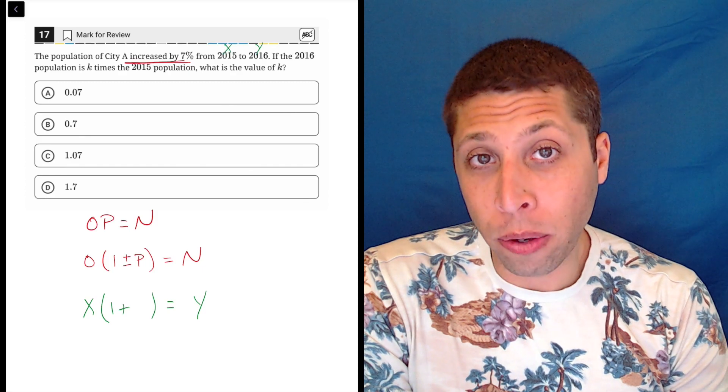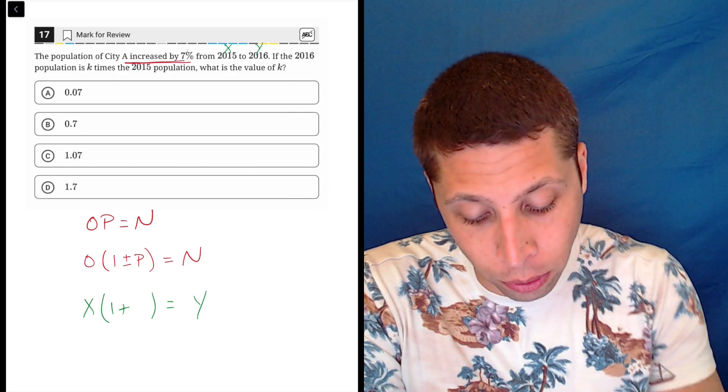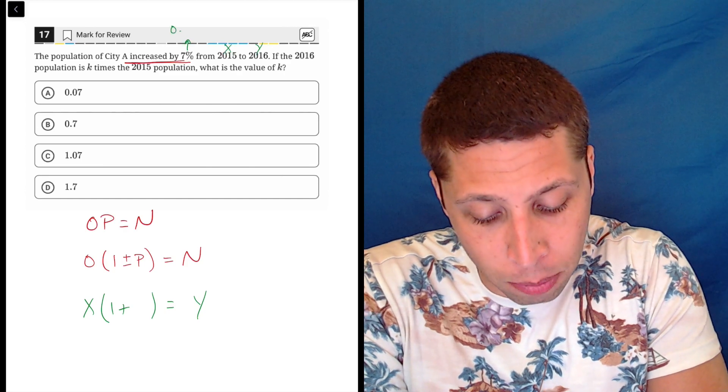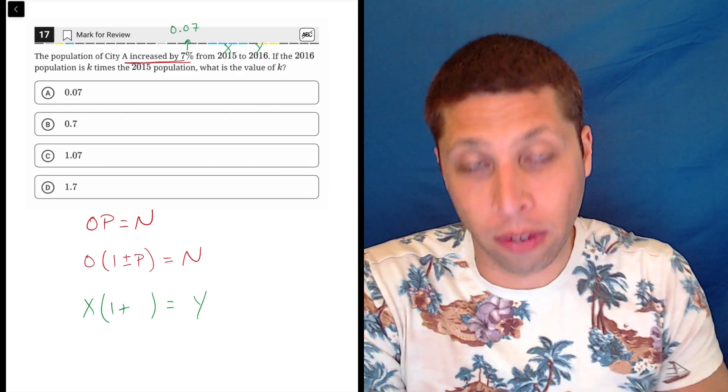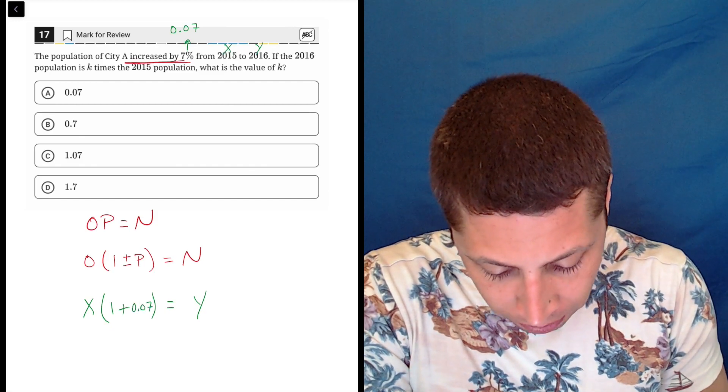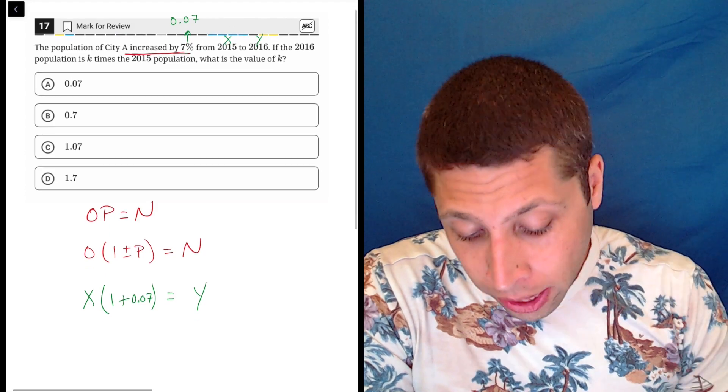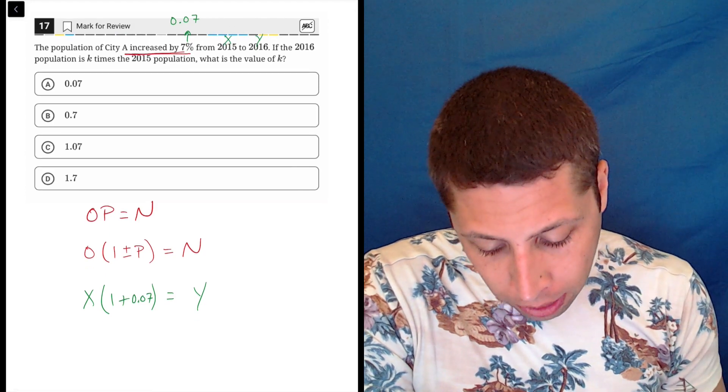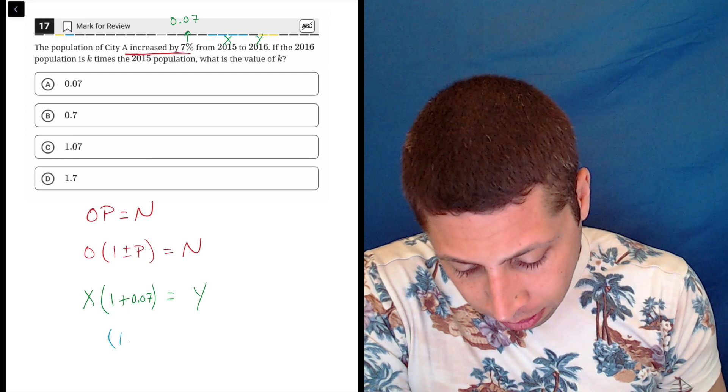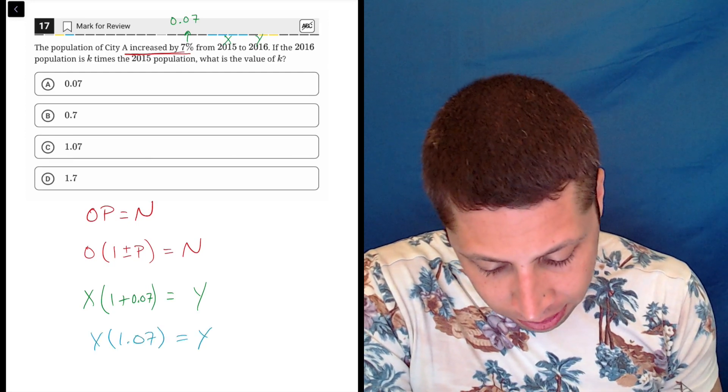And the P is always going to be written as a decimal in this formula. So when they say 7%, we have to convert that. 7% as a decimal is 0.07. We move the decimal place two units to the left, so 0.07. And now if we just kind of clean this up, we end up getting the answer. So 1 plus 0.07 is 1.07. So times X is equal to Y.